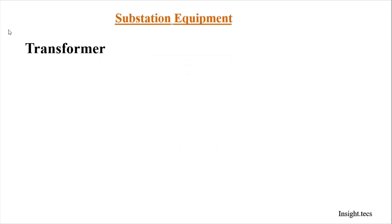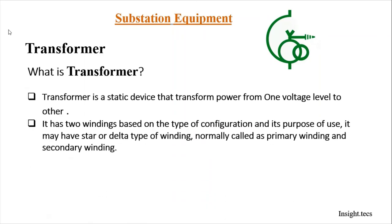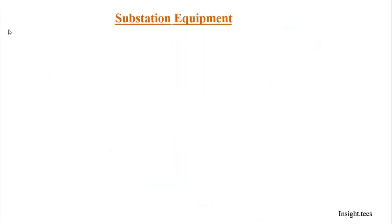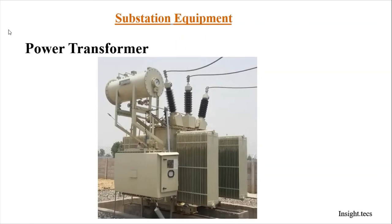The next component is the transformer, which is the most important equipment of a substation. Power transformers transform power by changing voltage and current levels — at high voltage the current is very low, and at low voltage the current is high, but total power remains constant. Transformers in power systems are rated in MVA based on their high and low voltage levels. The transformer shown here is 15 MVA, 66 kV to 11 kV. For the same voltage levels, transformers with different power capacities are available.